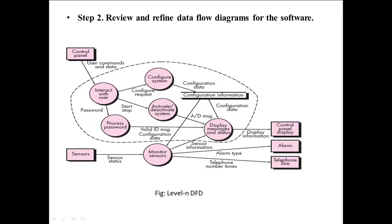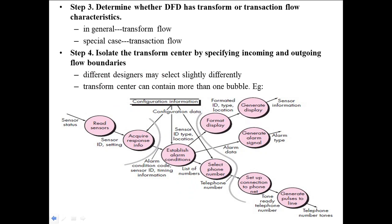Step 2 is review and refine data flow diagram for the software. Initially, we will draw the basic DFD diagram, and level by level, we will implement the diagram. We will give more processing work in it. In Step 3, we need to determine transform flow and transaction flow characteristics. In general, we have transform flows, and in some special cases, we have transaction flow. Here, see the picture - this is the overall structure diagram of the alarm system.